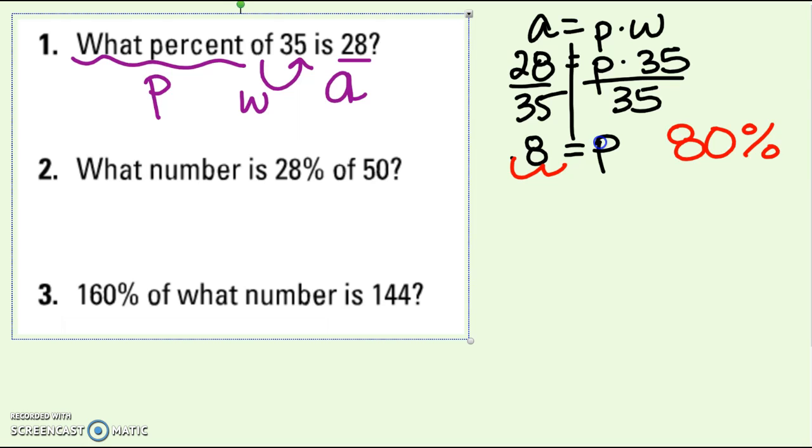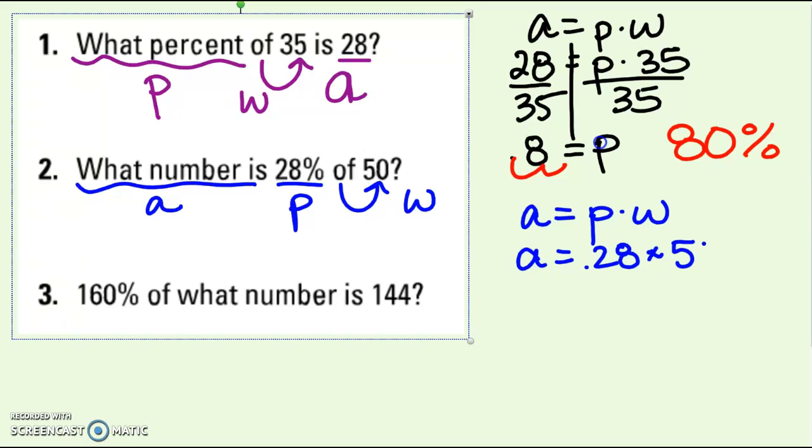Number two. What number is 28 percent of 50? What number looks like I'm looking for the part. 28 percent is obviously the percent. Of, here's my clue that that's going to be my whole or my total. So let's work this one out. Again, start with your equation. You must write this down on your paper first. Then plug things in where they go. A, I don't know, so it's still an A. P, the percent written as a decimal, 0.28. Of 50, so times 50.